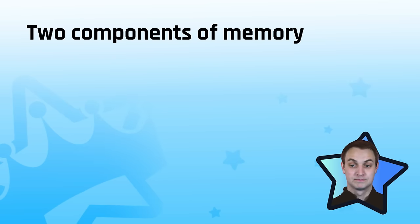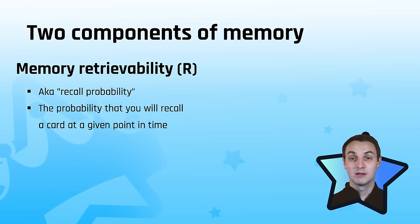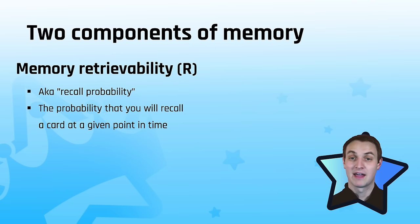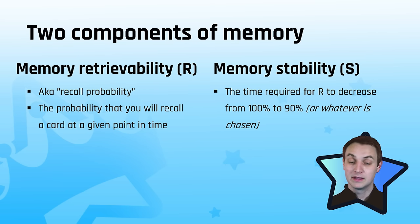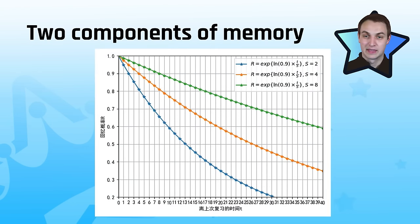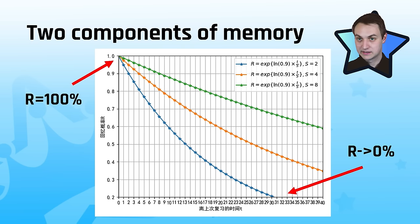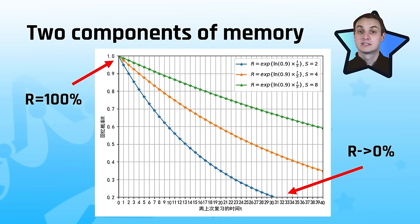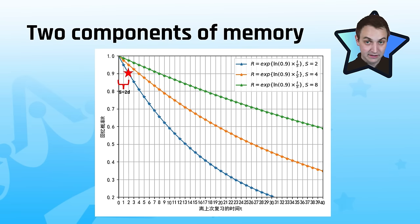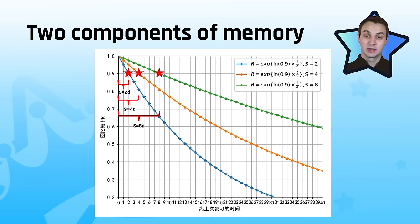There are two components of memory. Memory retrievability is the probability you can recall a card at any given point in time — retention is what we measure after the fact, while retrievability is what we're predicting. Memory stability is the time required for retrievability to decrease from 100% to 90%, or whatever threshold you set. Right when you study something retrievability is 100%, and it will eventually reach 0% if never reviewed. Stability varies by information type: a two-day stability means it drops to 90% in two days, four days for orange, eight for green — following a negative exponential curve.